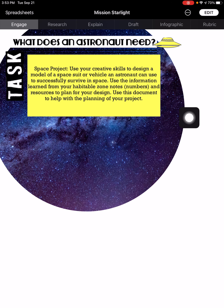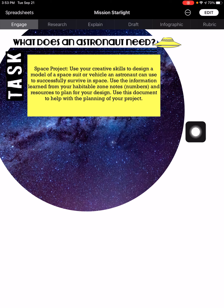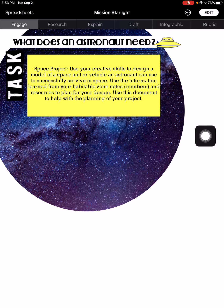Your group should have decided by now whether you're making a space suit or a space vehicle, and what materials you're bringing from home. Nothing to buy — just bring what you think you could put together for Friday's build. If you need a hot glue gun or other materials, bring those too. Always have more so you can take home any extra. Better to have more than not enough.